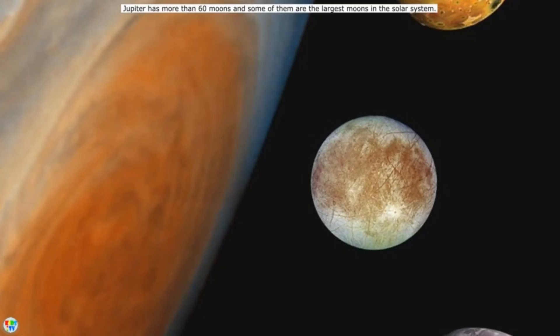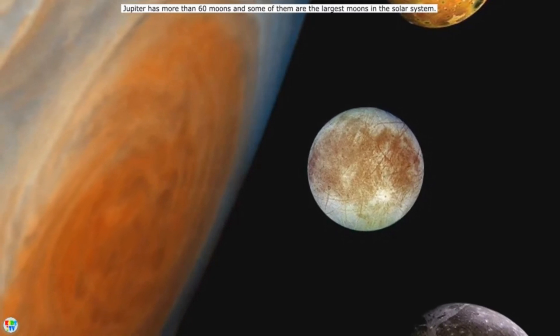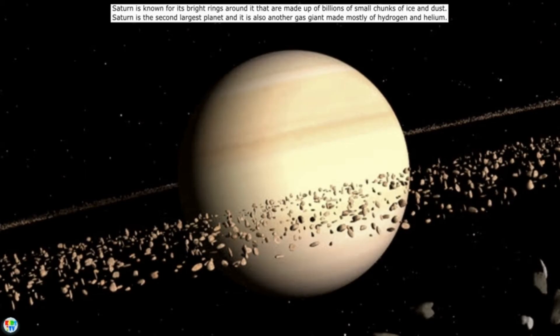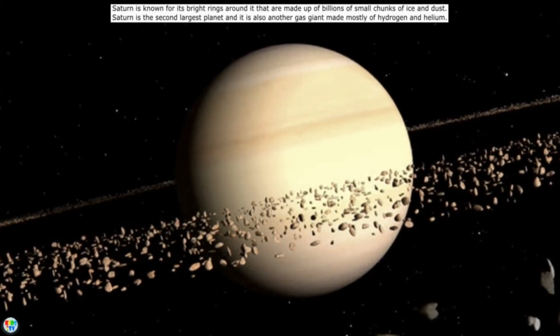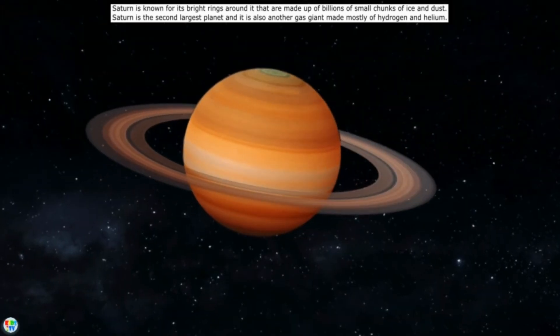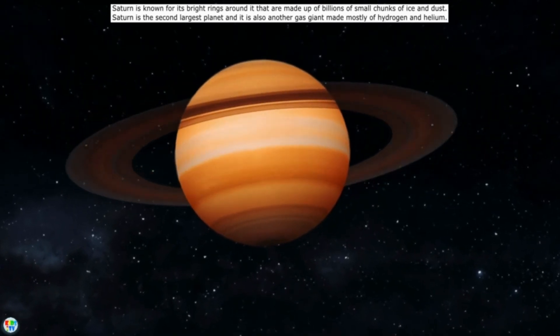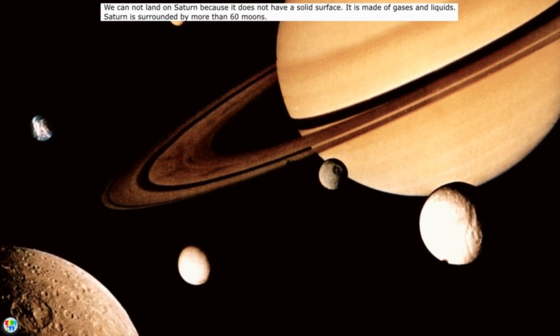Jupiter has more than 60 moons, and some of them are the largest moons in the solar system. Saturn, the sixth planet from the Sun. Saturn is known for its bright rings around it that are made up of billions of small chunks of ice and dust. Saturn is the second largest planet and it is also another gas giant made mostly of hydrogen and helium. We cannot land on Saturn because it does not have a solid surface. It is made of gases and liquids.